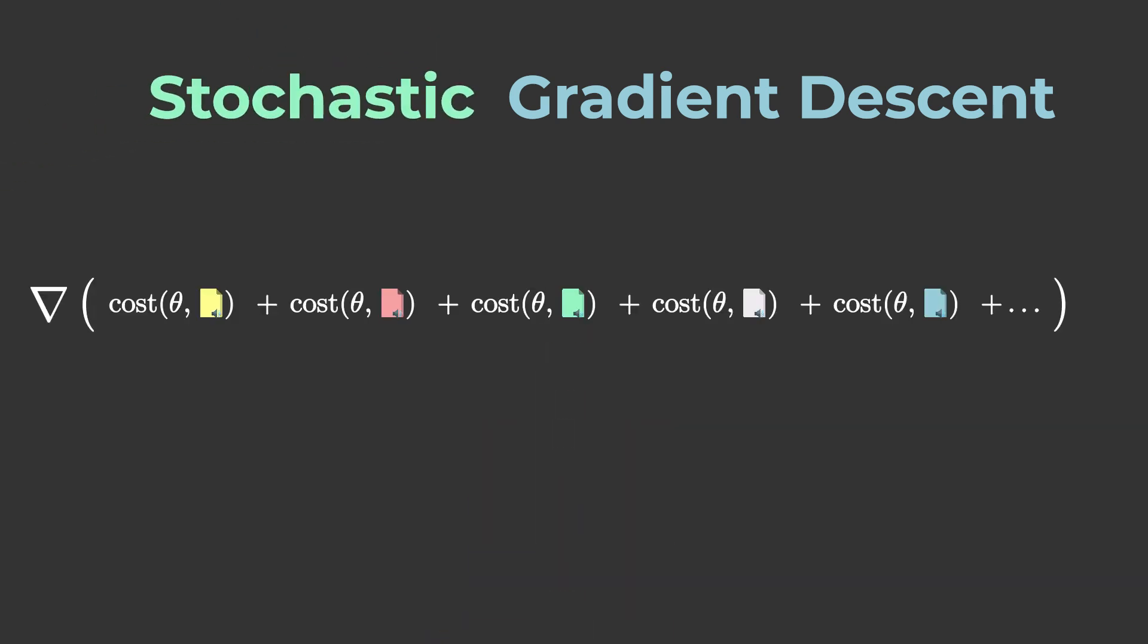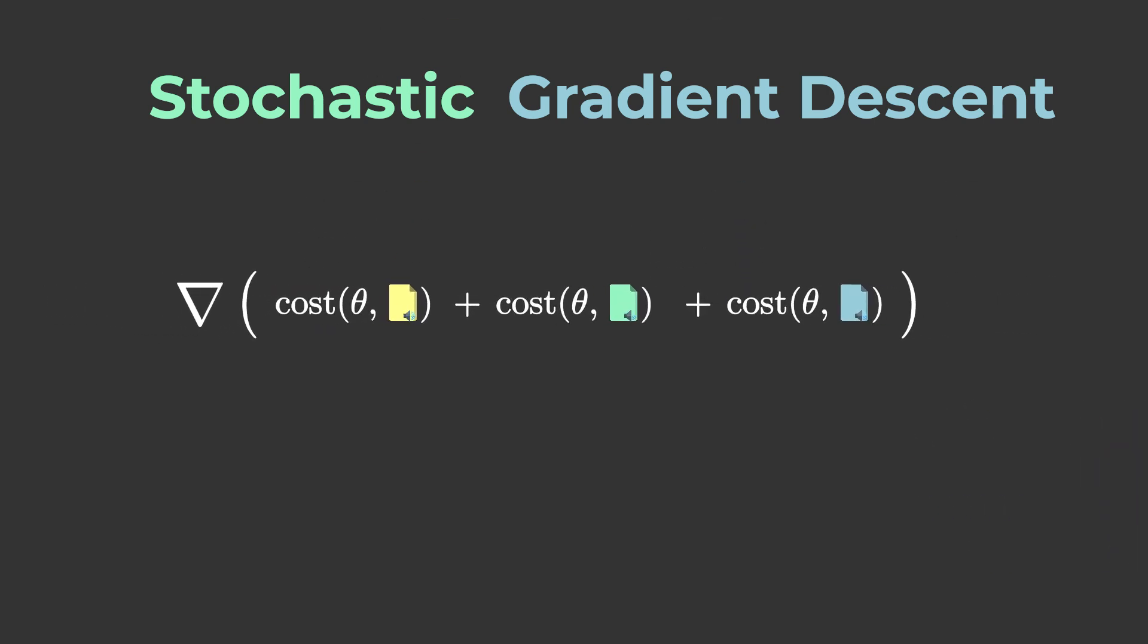In stochastic gradient descent, instead of taking this sum over all training examples when taking the gradient of the cost function, which can be expensive when the number of examples is big, we can take a small random subset at each iteration.